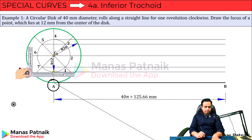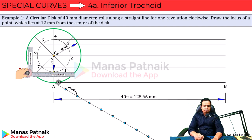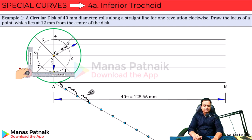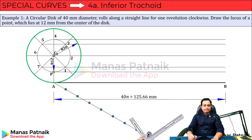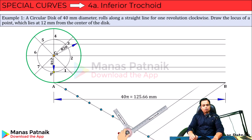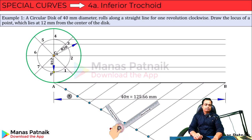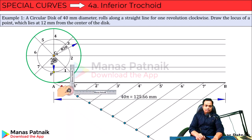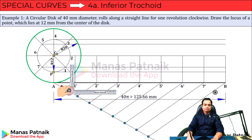Using the line division technique, draw a line randomly at any angle starting from point A. Place equally spaced points on it — the distance between any two consecutive points must always be the same. I've taken this distance to be 1 centimeter. Connect the eighth point with point B, then use the drafter to draw parallel lines through each point, giving you eight equal divisions labeled 1′, 2′, and so on.